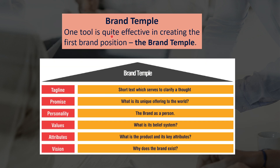One tool which is quite effective in creating the first brand position is the Brand Temple. To understand this, we will look at the example of LensKart. First, while creating a brand, you need to have a vision — why does your brand exist? In the case of LensKart, they exist to provide customers with lenses, specs, or sunglasses.